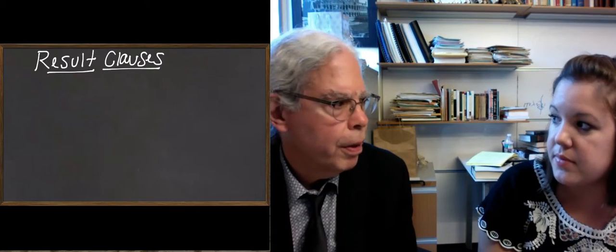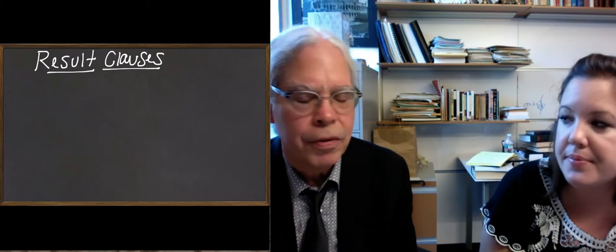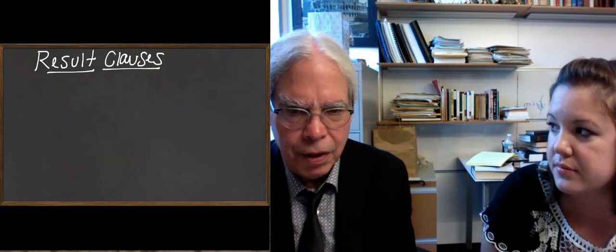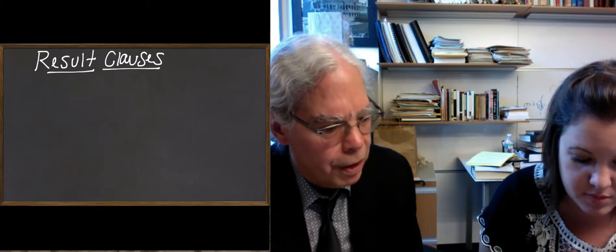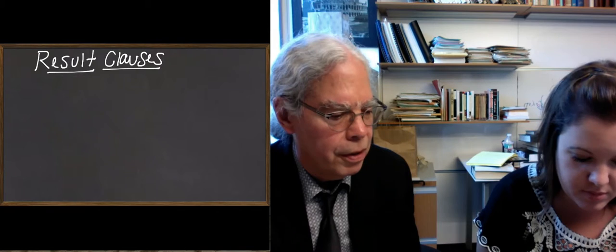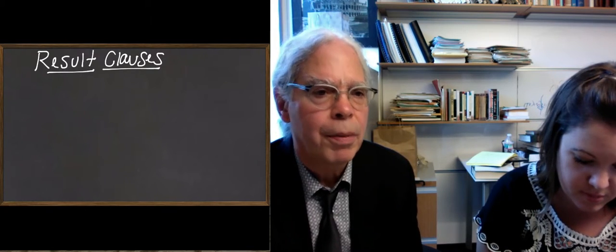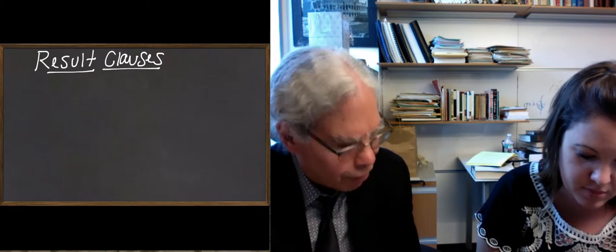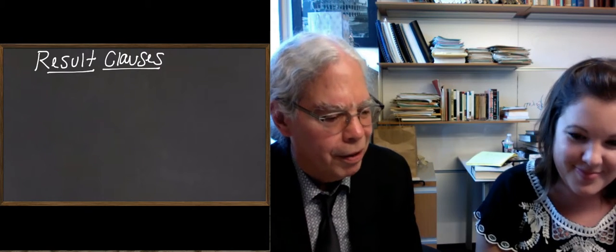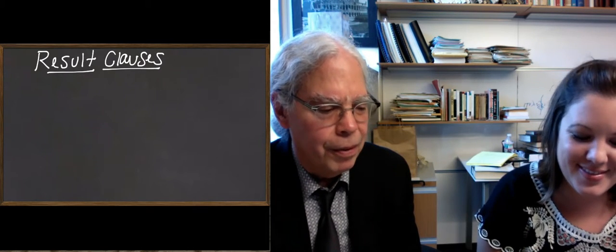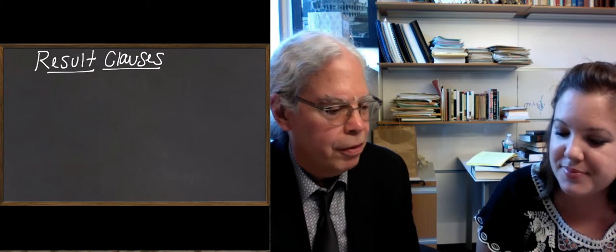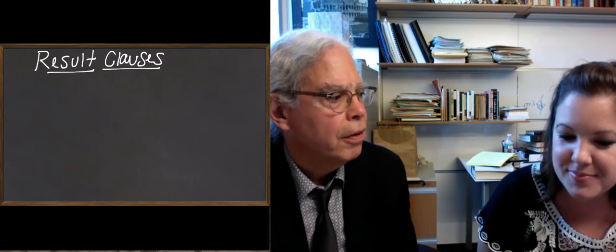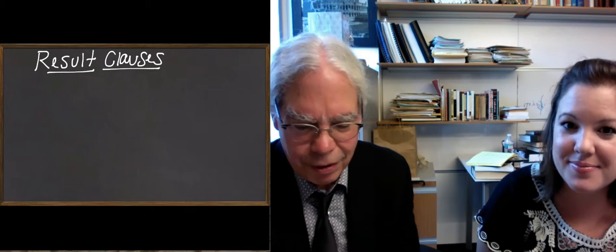We also learned that you can use participles, the future participles, to do this. This is just an alternative way of doing it that's more succinct. So what we're going to learn today is about result clauses. And a result clause is a sentence of the type, I was so hungry that I could eat a bear. So what you're talking about in that I could eat a bear is the result of me being in a certain state. Or eat a horse. Let's do a horse.